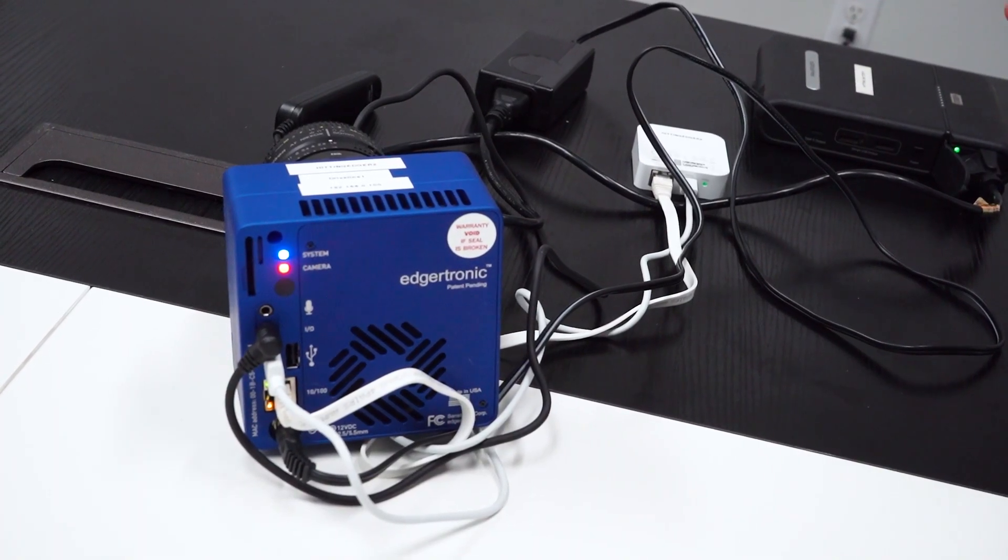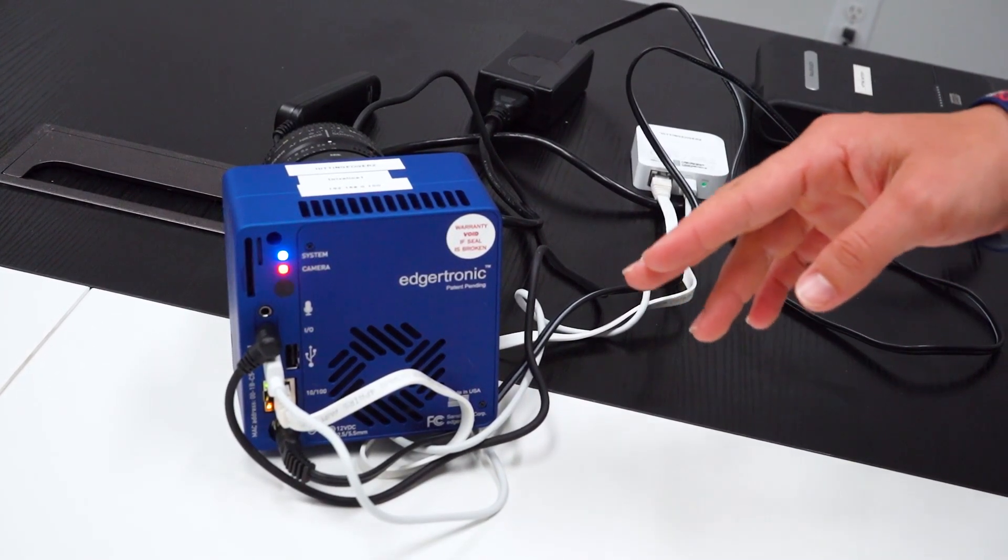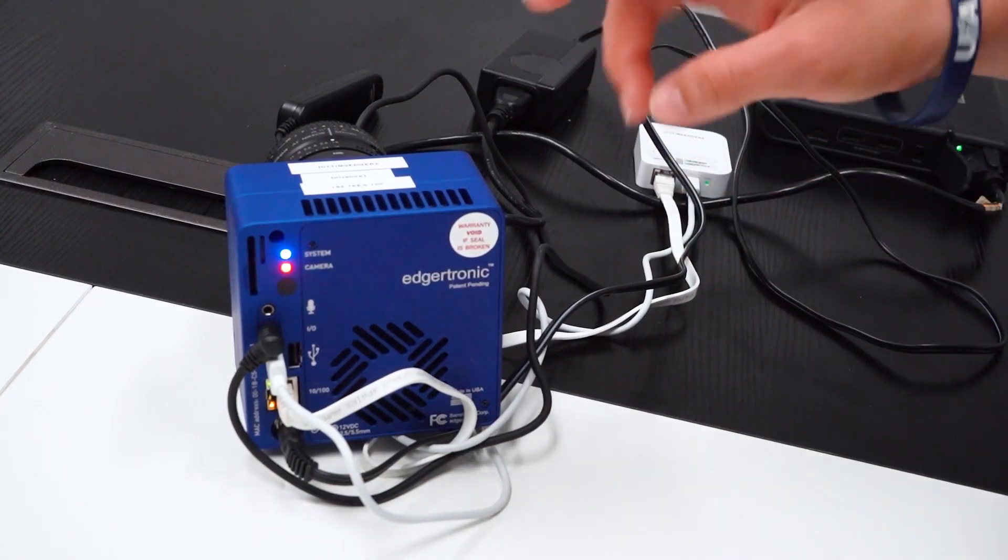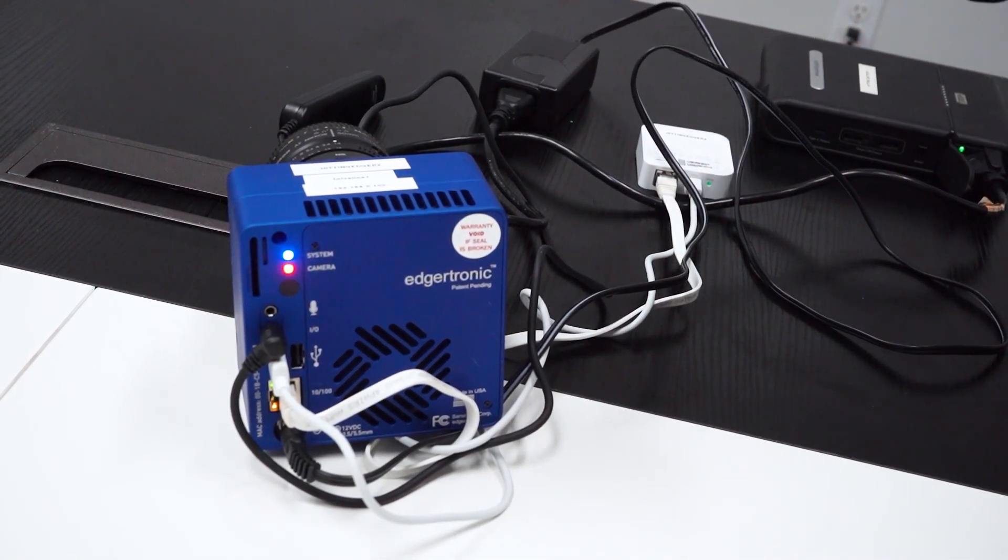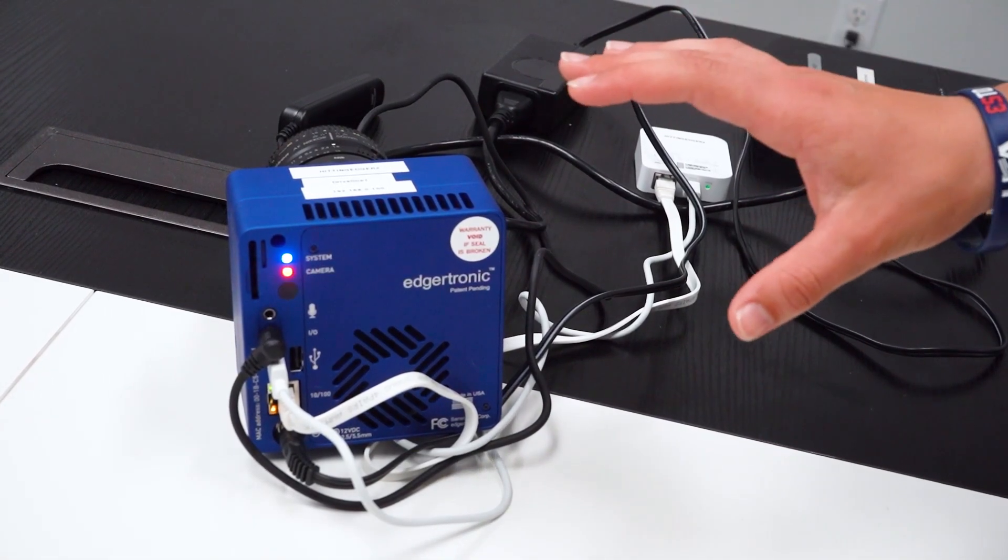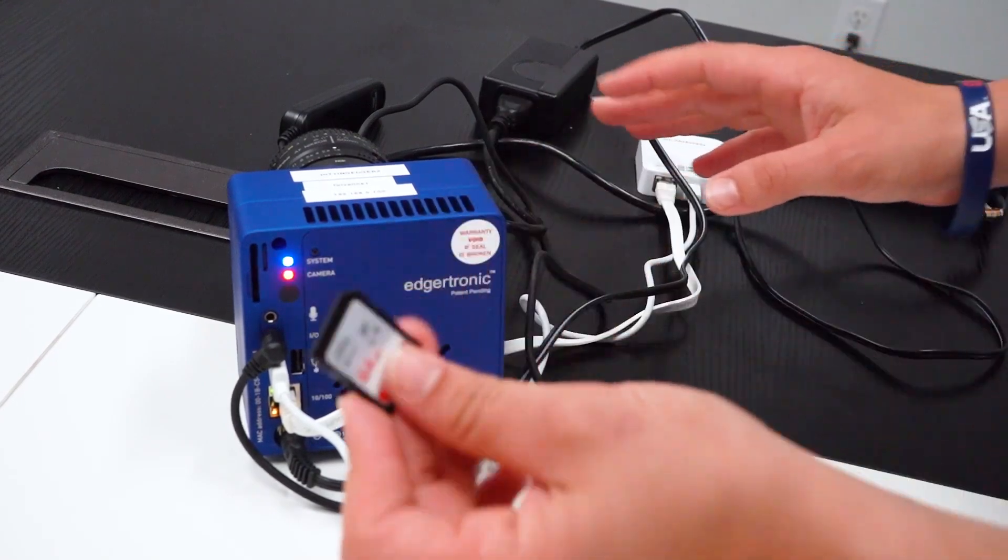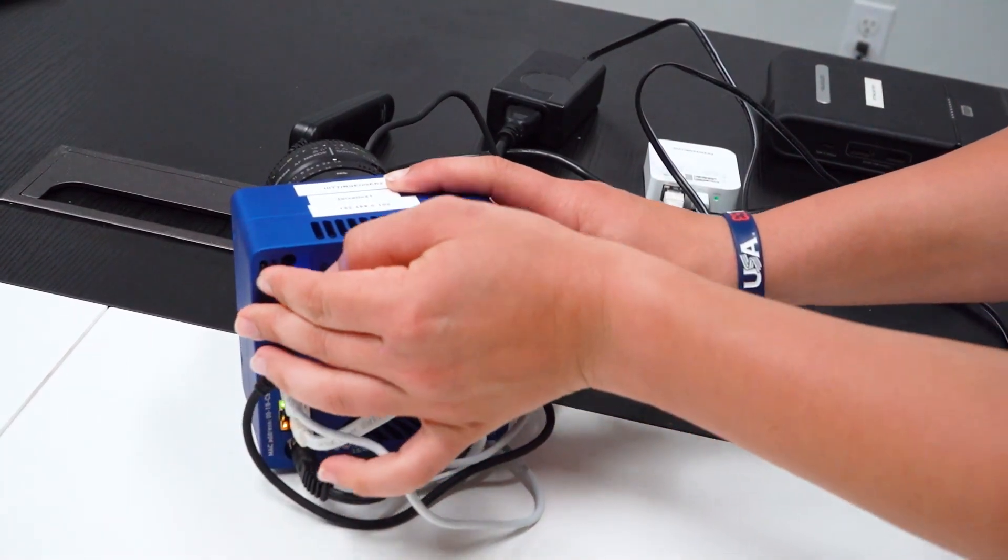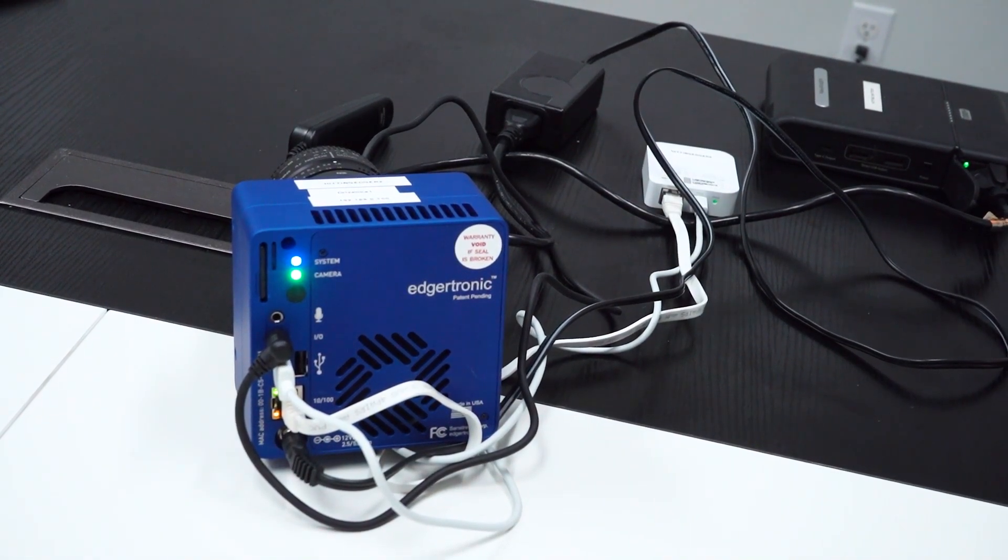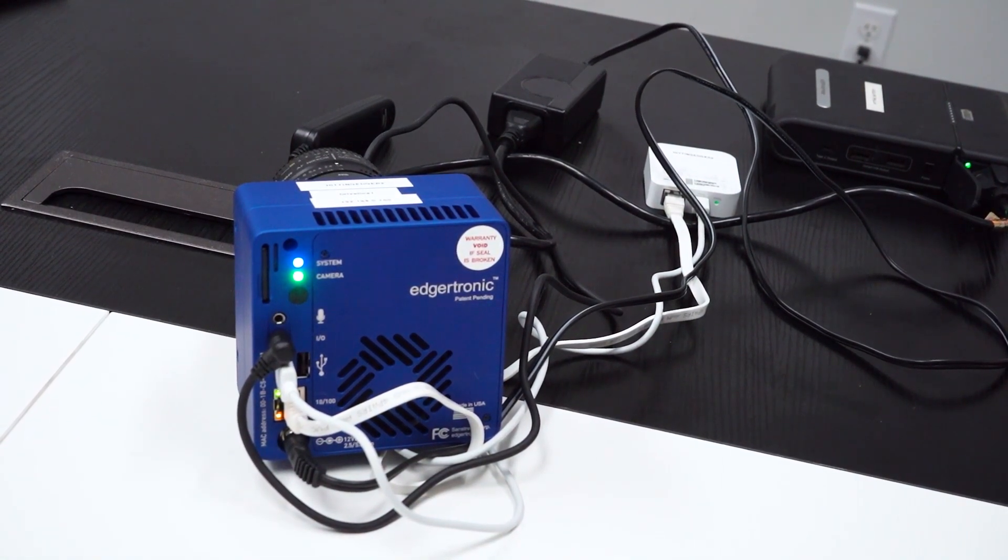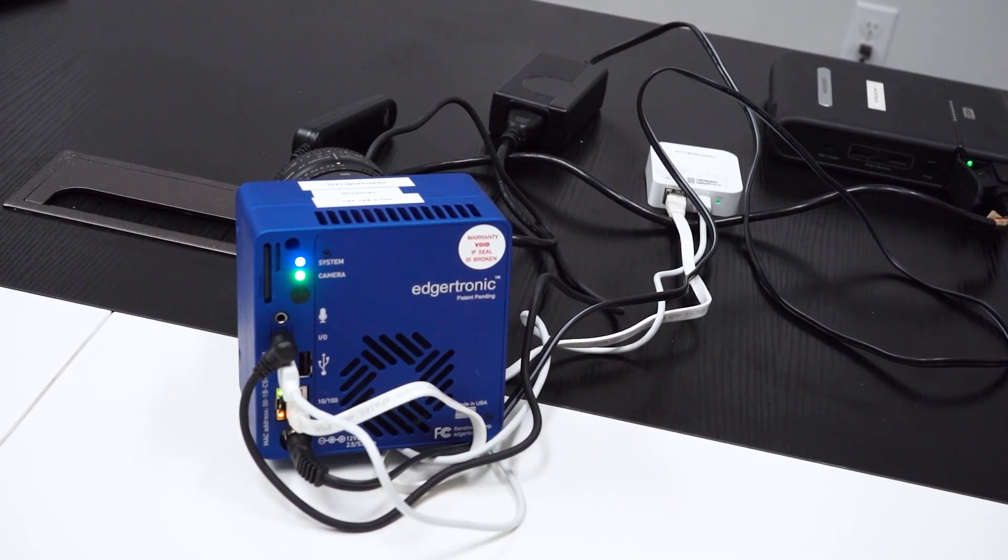So the completed setup of the hardware of the Edgertronic camera is completed. However, you can actually notice here that the camera is still blinking blue, red and green. So what that actually means is that there is no SD card inserted into the camera. So to fix this issue, all you're going to do is put your SD card in. And then the camera will begin to just have a blue and green light, which means the completion of setting up your Edgertronic camera.